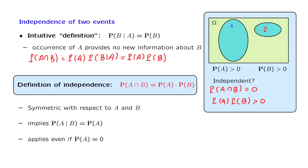Independence is a relation about information. It is important to always keep in mind the intuitive meaning of independence. Two events are independent if the occurrence of one event does not change our beliefs about the other. It does not affect the probability that the other event also occurs.